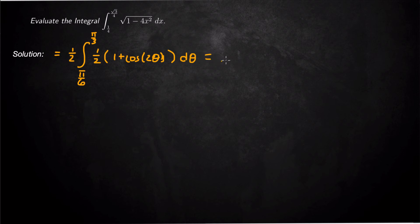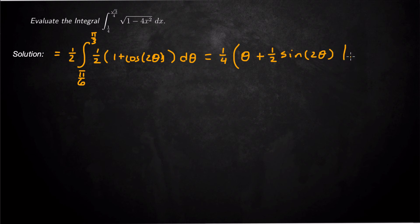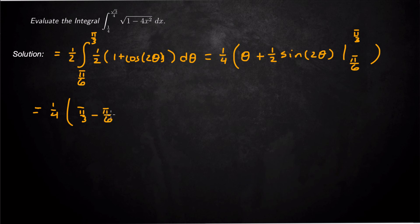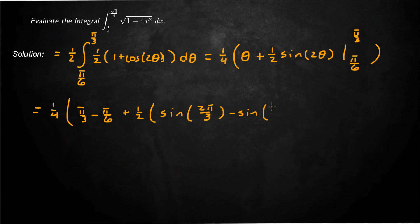Pulling the ½ out and combining with the other ½ gives 1/4. Integrating 1 gives θ, and the integral of cos2θ gives ½sin2θ. So we have (1/4)[θ + ½sin2θ] evaluated from π/6 to π/3. That gives (1/4) times [(π/3 + ½sin(2π/3)) minus (π/6 + ½sin(2π/6))].